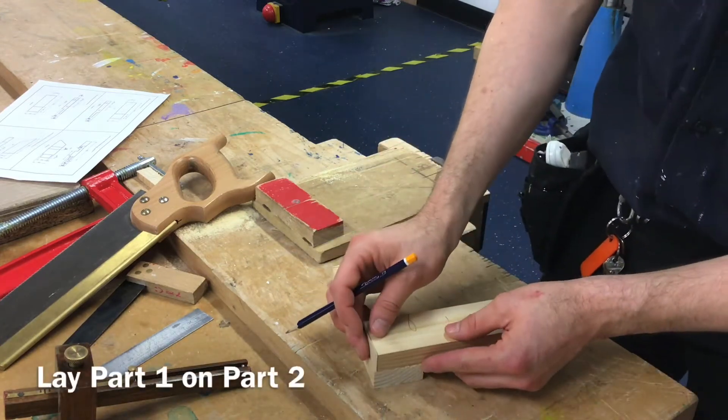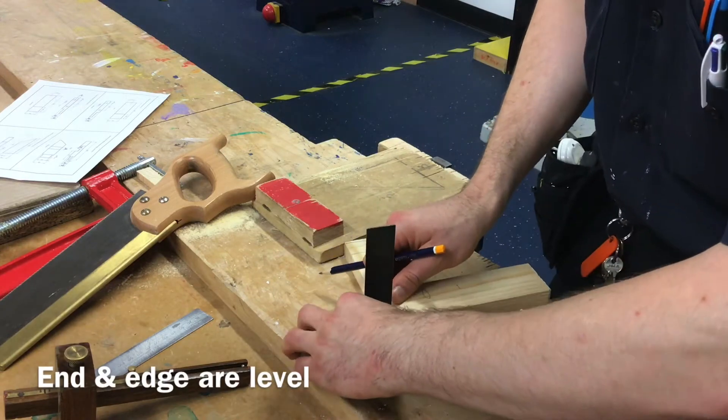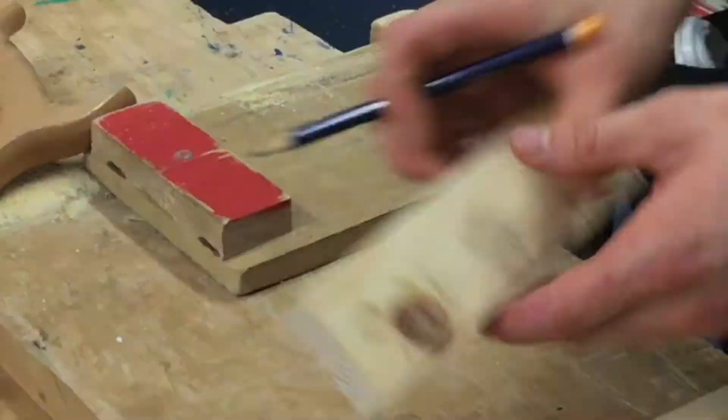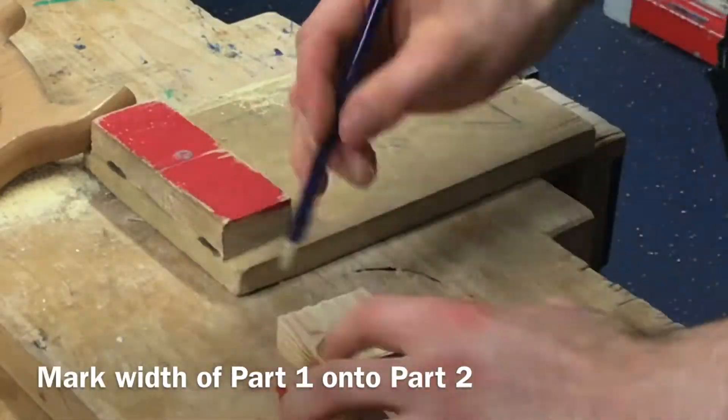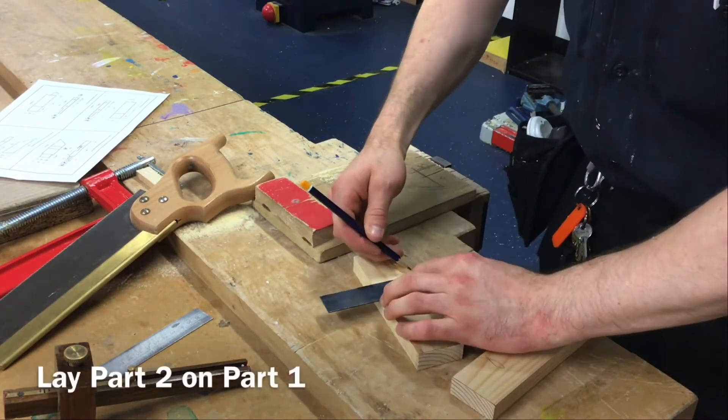Part one on top of part two and I check that the end grain and the edge actually line up with one another. I'm going to mark a little point onto this. I'm going to square that all the way around.